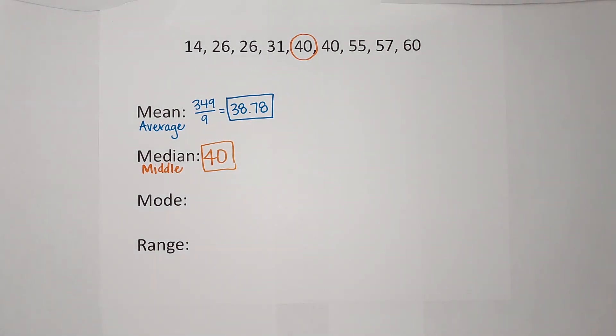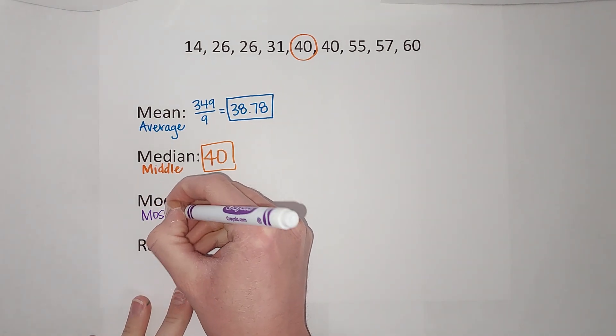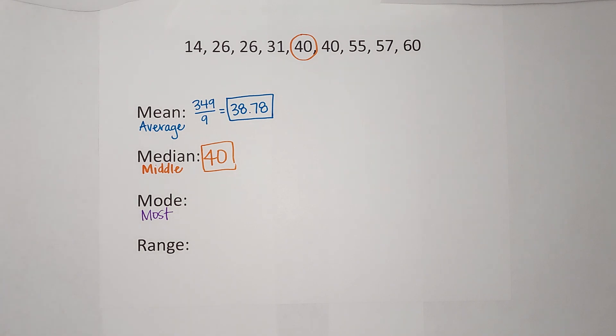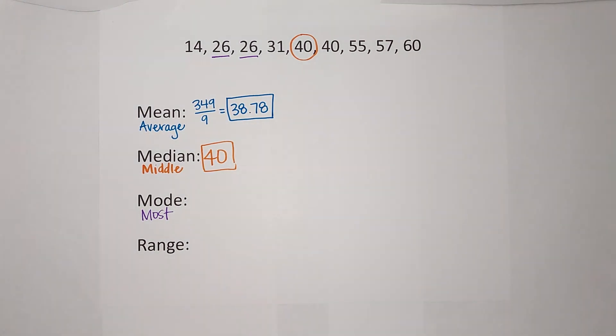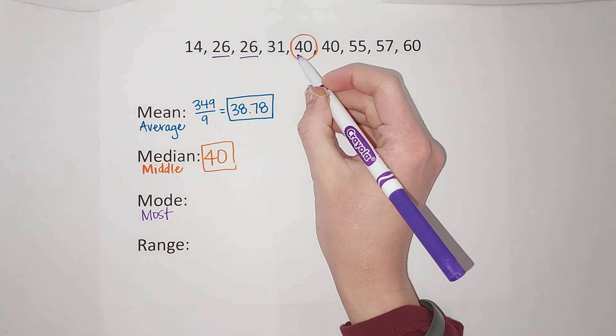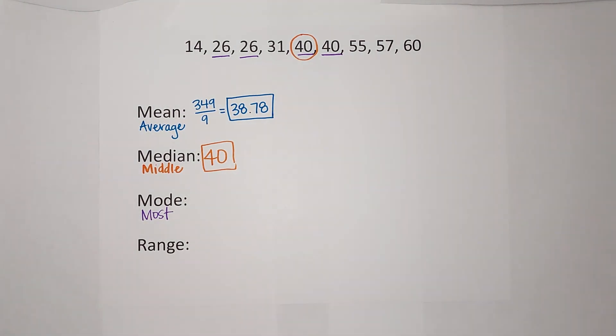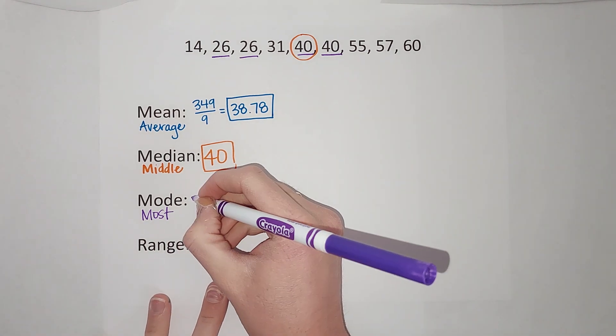The mode is the number you see the most. What do I mean by that? I mean that I have two 26s and I have two 40s.